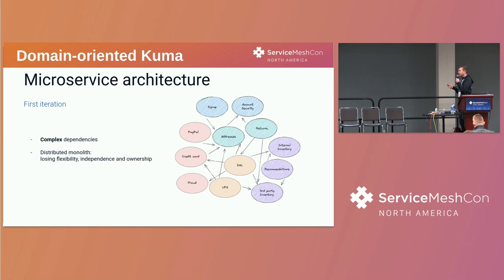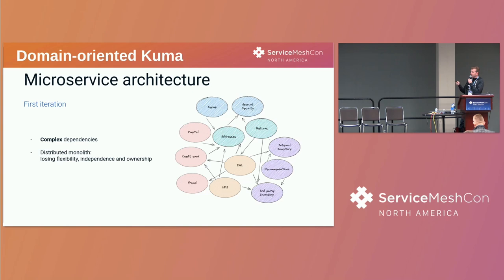What that means is you have to start coordinating with other teams. You're the owner of your service, but you've got to talk to the owners of other services, and you've got to coordinate deployments. Maybe one of the teams doesn't have the bandwidth to do this at the moment, but you want to get your release out. So maybe you just implement it yourself in their service just to get it done. And this doesn't scale very well.